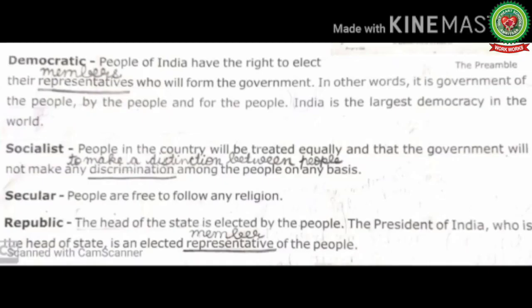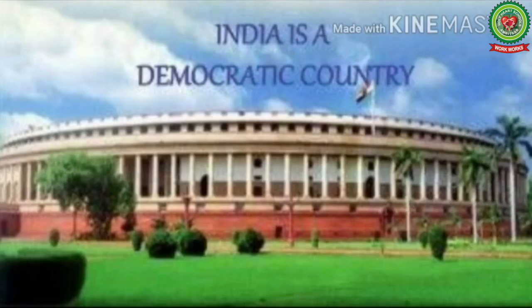Number one — Democratic: people of India have the right to elect their representatives who will form the government. Representative means members. In other words, it is government of the people, by the people, and for the people. India is the largest democracy in the world.